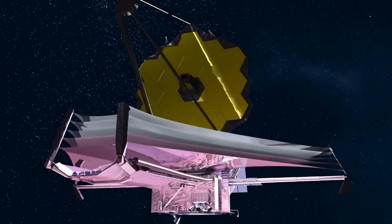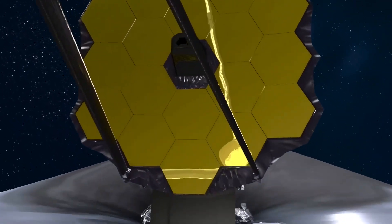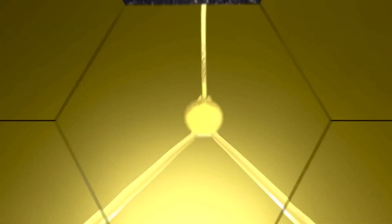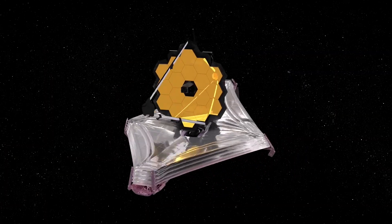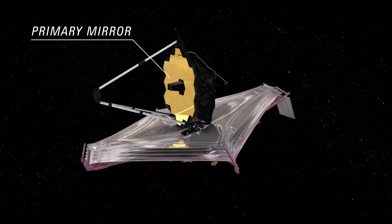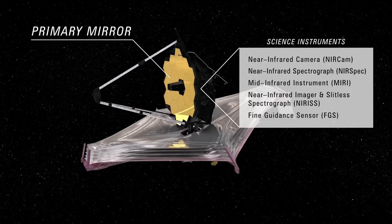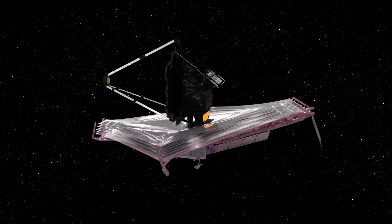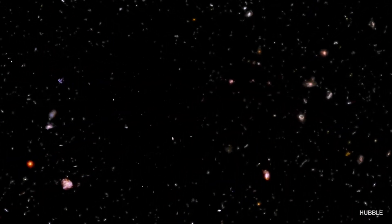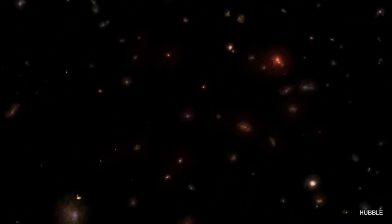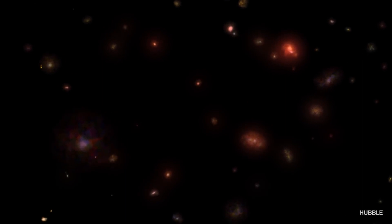The James Webb Space Telescope is specially designed to detect the first galaxies. Webb's large mirror and sensitive instruments will enable it to collect more infrared light than we've ever seen, allowing the first galaxies to emerge into view.